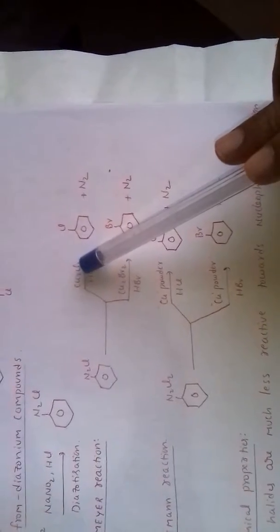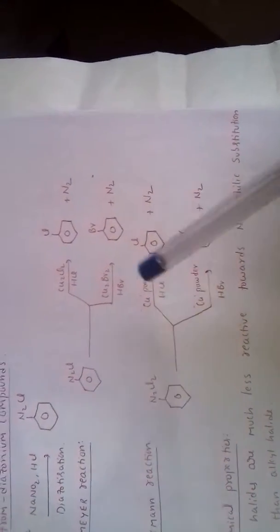The difference between Sandmeyer and Gutterman reactions is: In Sandmeyer reaction, cuprous chloride and cuprous bromide are the catalysts. In Gutterman reaction, copper powder acts as the catalyst. Yield in Sandmeyer reaction is higher than Gutterman reaction.